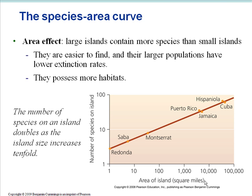The species-area curve shows the results of island biogeography theory with respect to area size. Essentially, large islands contain more species than small islands. They are easier to find and their larger populations have lower extinction rates. They also possess more habitat, so they have more habitat diversity.